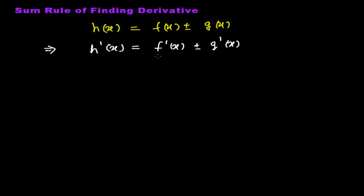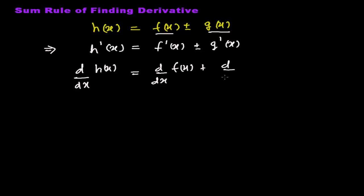This means the derivative of h(x) is just the algebraic sum or algebraic difference of the individual derivatives of those two functions. You might have seen this written in books as: the derivative of h(x) with respect to x equals the derivative of f(x) plus the derivative of g(x). You can represent it either way — it may be plus or minus depending on the situation. Now I'll give a simple example, then do some more complex problems.